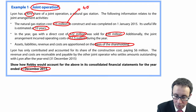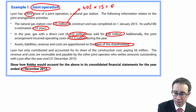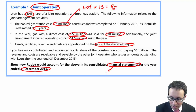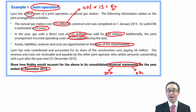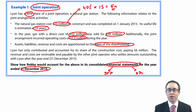So when thinking about the financial statements, we need to consider both what goes in the SFP and what goes in the statement of profit or loss. The last important point is that the revenue and costs are receivable and payable by the other joint operator, who settles amounts outstanding with Leon after the year end. So we need to set up some form of receivable or payable based on amounts due to or from the other joint venture party — we'll discuss that in more detail as we go along.